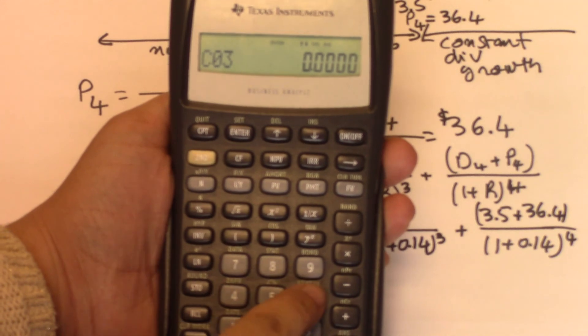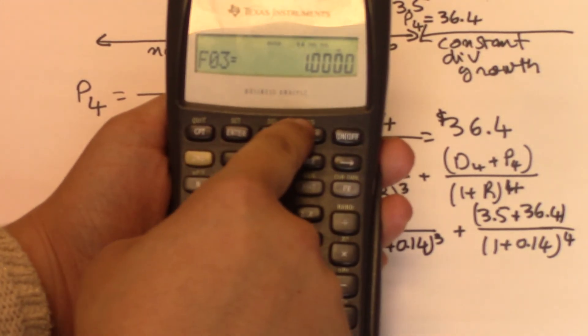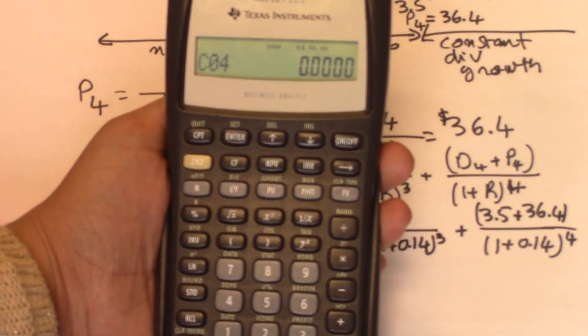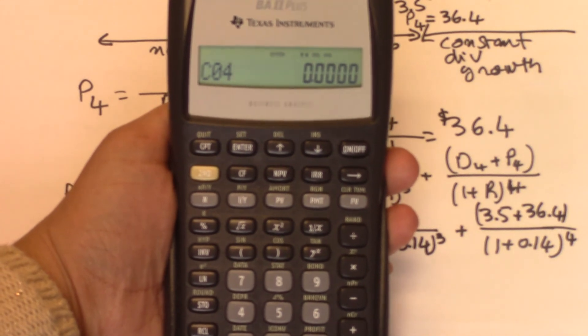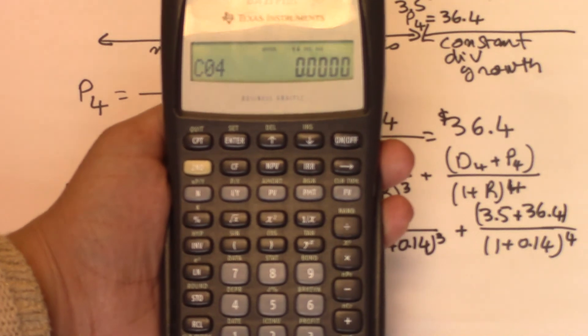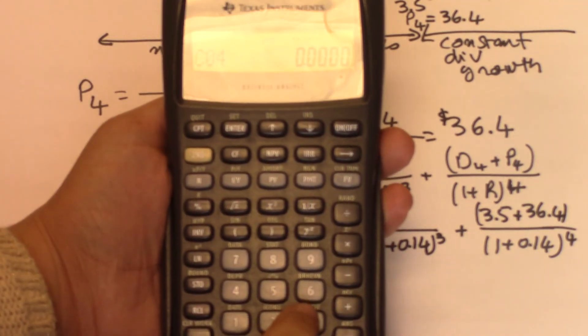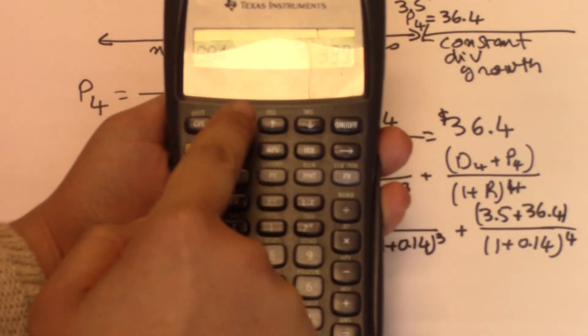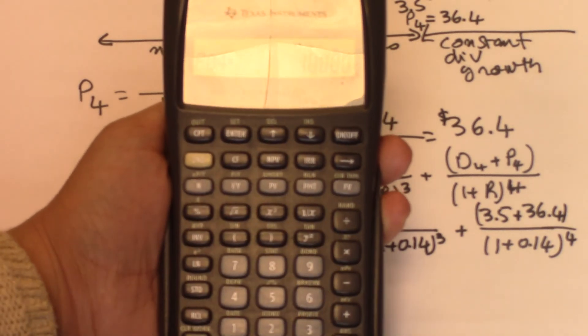C03 is 6, enter, down arrow. And C04, at the end of year 4, we're getting that dividend of 3.5 plus the price of 36.4. You add them together and you get 39.9. Enter, down arrow.